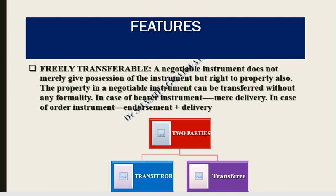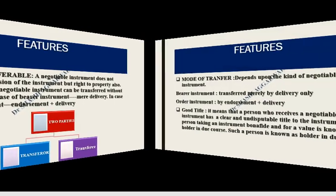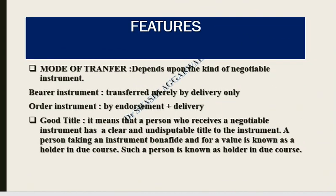When we transfer the negotiable instrument, there are minimum two parties: a transferor and a transferee. For an order instrument, which is drawn in the name of the payee, you have to do endorsement and delivery. Good title means that the negotiable instrument you receive has a clear and undisputable title of ownership. A holder who is bona fide and who has given value — a holder in due course — does not lose good title even if the transferor's title was defective.